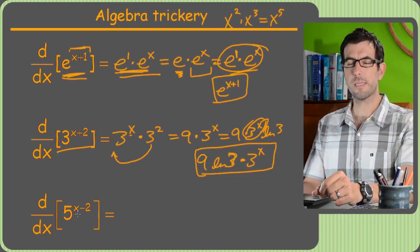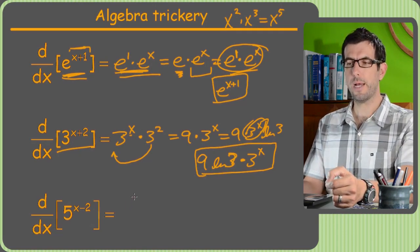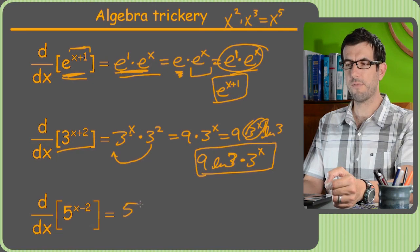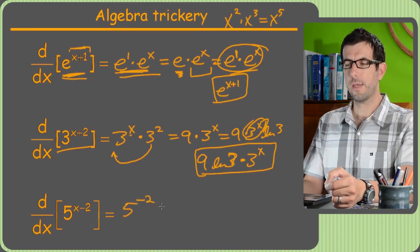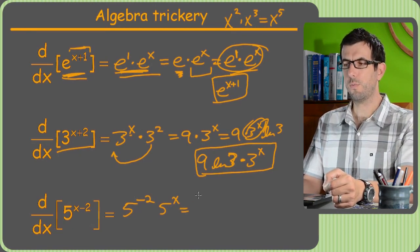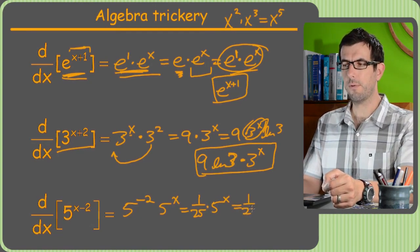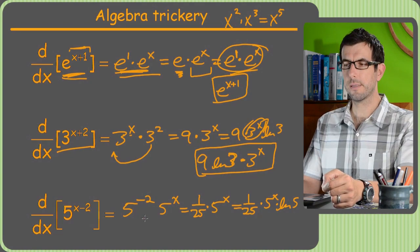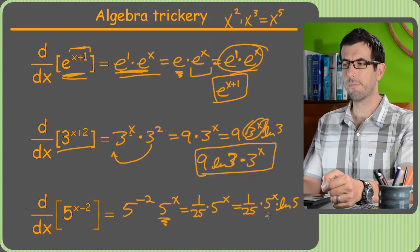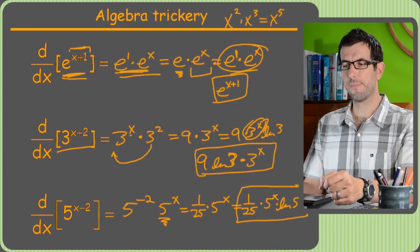Alright, last one. This one's a little bit different just because it's x minus 2 instead of x plus 2, but that doesn't mean the same trick can't apply. So what we'll do is we'll figure, you know what, that's the same thing as 5 to the negative 2 times 5 to the x, which is just 1 25th times 5 to the x. And now we take the derivative. So we leave the 1 25th alone, then we leave the 5 to the x alone, but we have to multiply by ln of 5 since our base thing was not e, it was 5. We circle the whole answer, not just part of it.